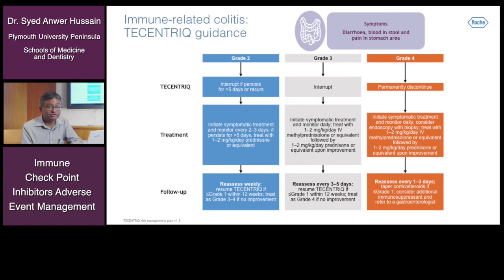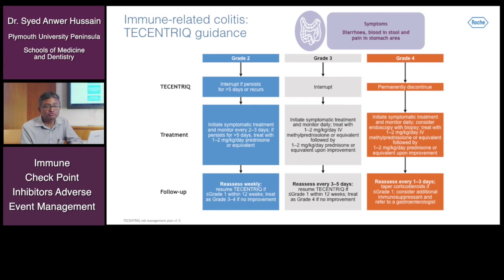For grade 3 colitis, interrupt treatment, apply symptomatic management, monitor daily, and treat with 1 to 2 mg/kg/day of intravenous methylprednisolone or equivalent followed by 1 to 2 mg/kg/day prednisolone equivalent. Upon improvement, reassess after three to five days and resume T-centric if grade becomes less than 1 within 12 weeks. Treat as grade 4 if there is no improvement. For grade 4, permanently discontinue T-centric, initiate symptomatic treatment, monitor daily, consider endoscopy with biopsy, treat with 1 to 2 mg/kg/day IV methylprednisolone, and reassess every one to three days. Taper steroids once grade is 1 and consider additional immunosuppressants; refer to a gastroenterologist.